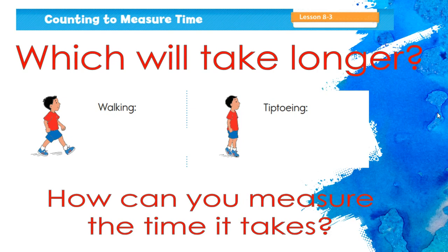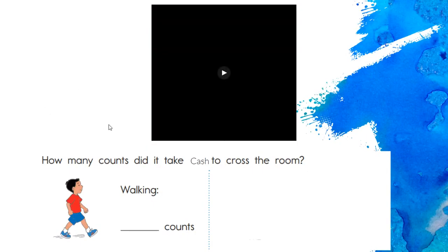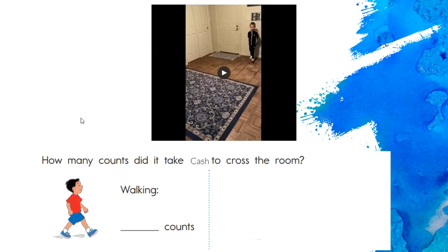I would say probably tiptoeing because you have to get up on your toes. How can you measure the time it takes? So you can do that by counting. So we're going to practice that right now. So we're going to look at this video and we're going to count how long it takes Cash to go across the room. Okay, are you ready?